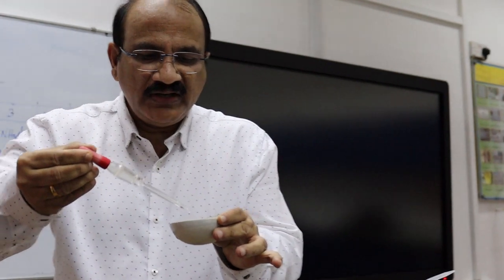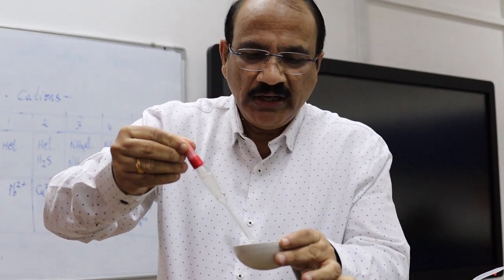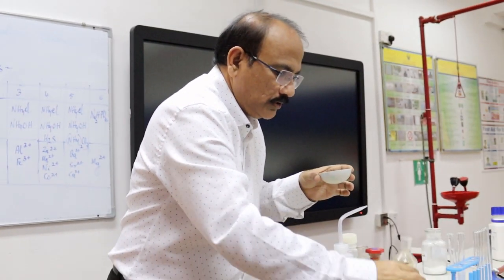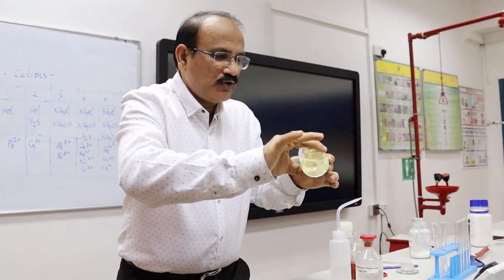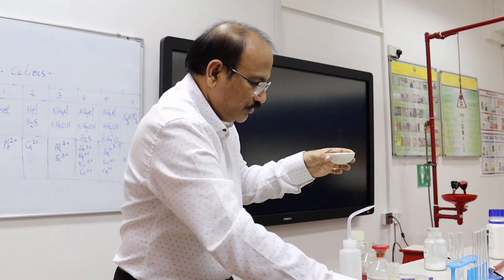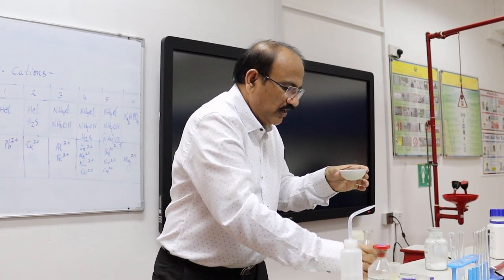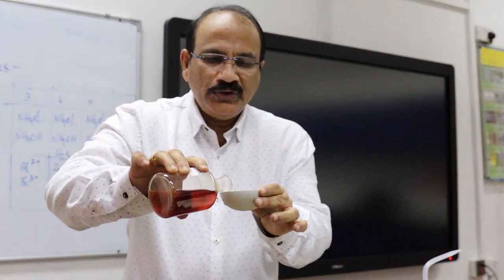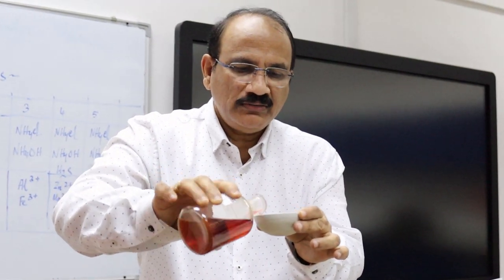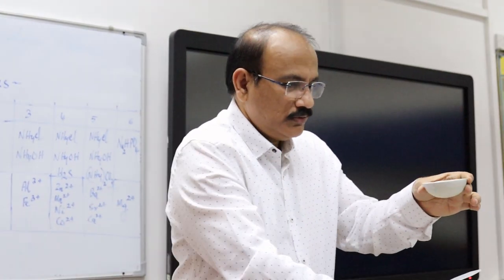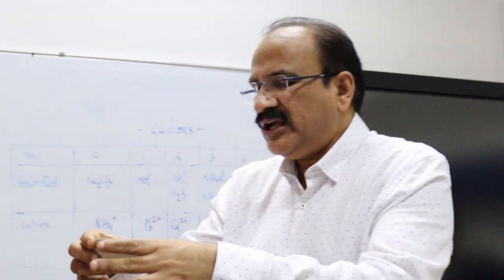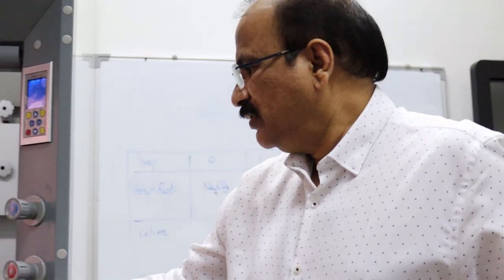For that, we will take the salt and add concentrated nitric acid. This is concentrated nitric acid. And into that, we will add a few drops of cobalt nitrate. It is added, and now it will be kept for boiling.